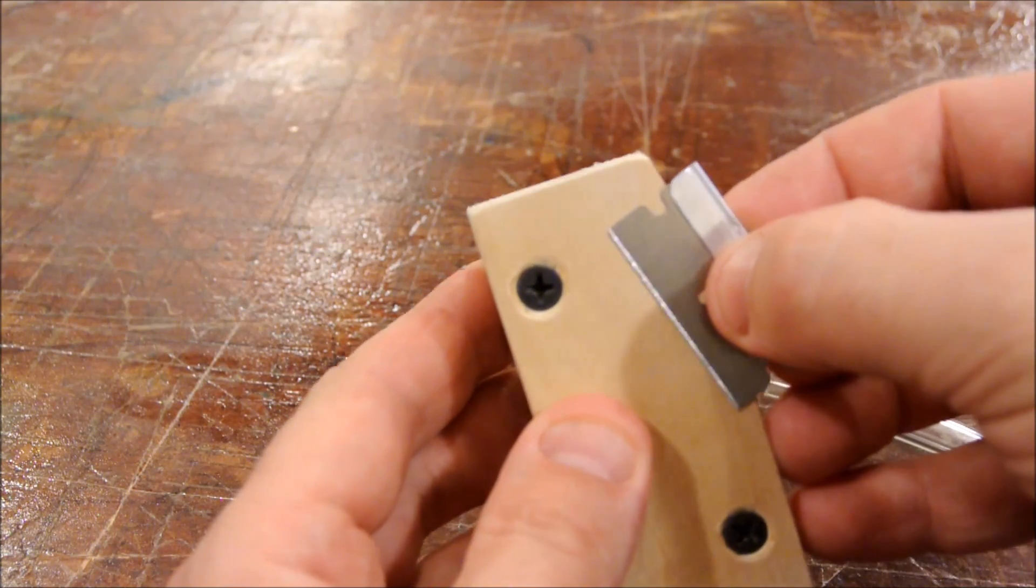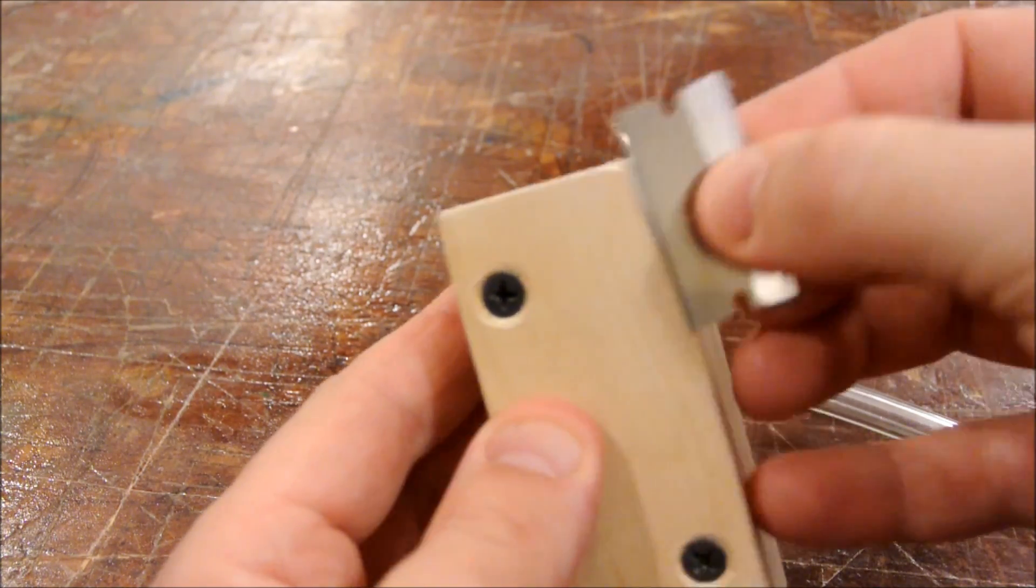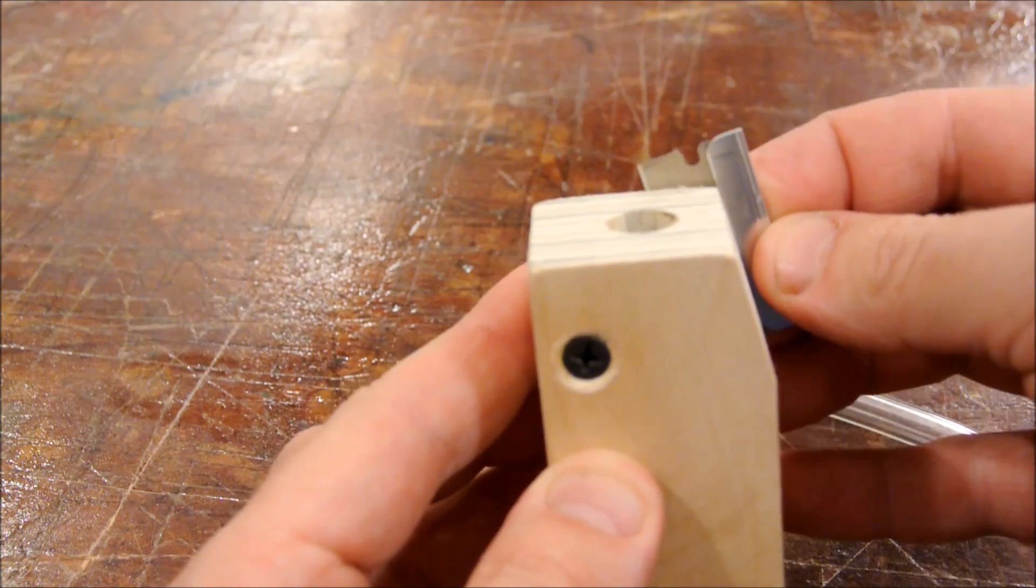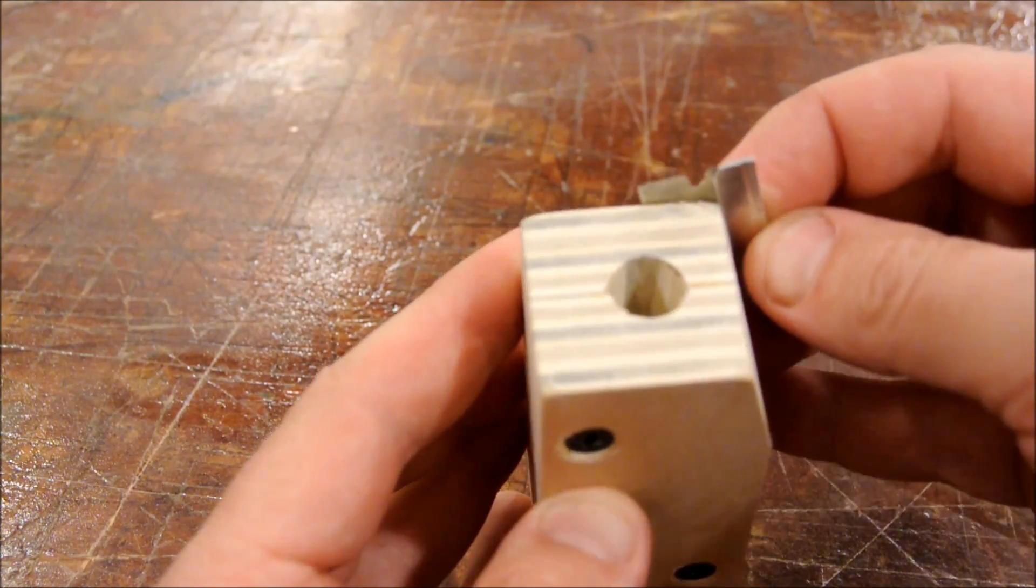The little angle on the side is for the razor blade to sit against and you want to adjust it so that the razor blade only cuts one wall at a time.